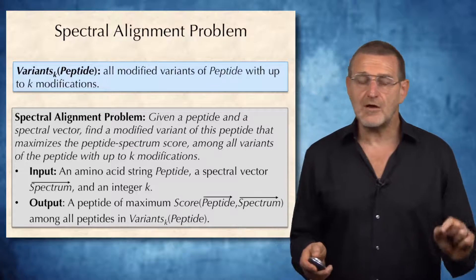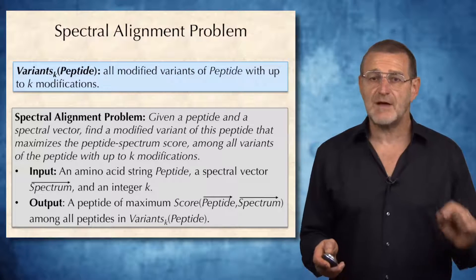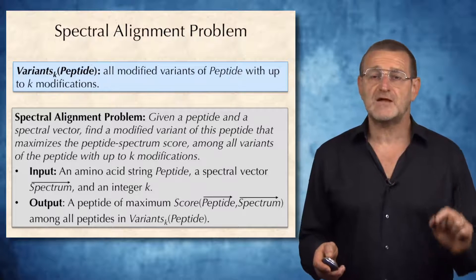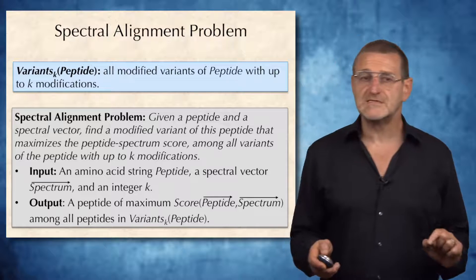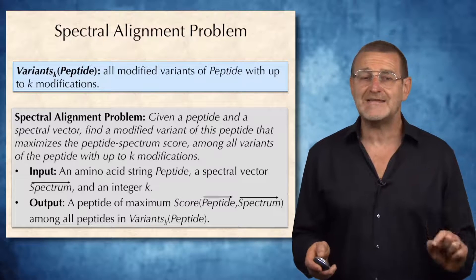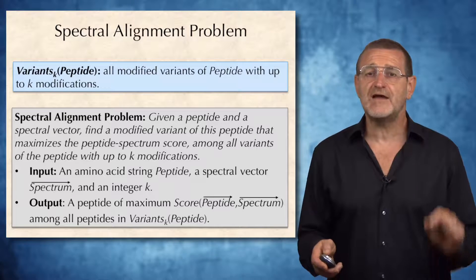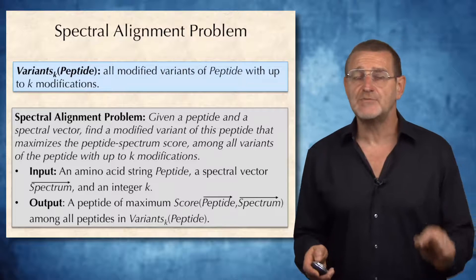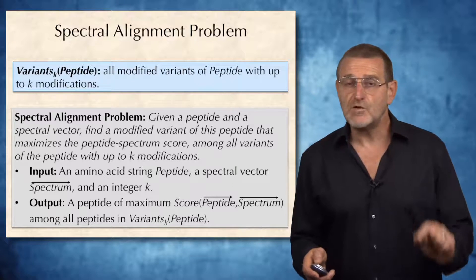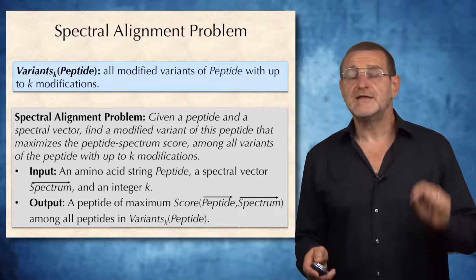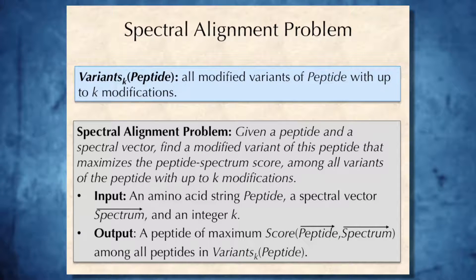After we figure out how modifications affect the peptide vector, we are ready to formulate the spectral alignment problem. First, let's define the notion of a variance-k peptide as the set of all modified variants of a peptide with up to k modifications. We want to solve the spectral alignment problem: given a peptide and a spectral vector, find a modified variant of this peptide that maximizes the peptide spectrum score among all variants of the peptide with up to k modifications.